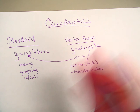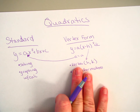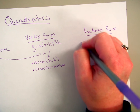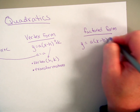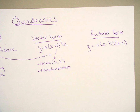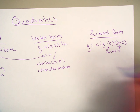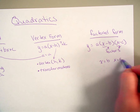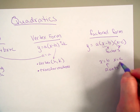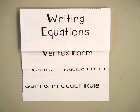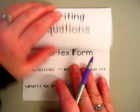Before, we were finding vertex form by locating the vertex and plugging it in. Today we'll do more work with vertex form. We've also talked about factored form, which lets you see the factors quickly. Changing those sign values gives you your roots — where the parabola hits the x-axis. Those are your solutions, roots, zeros, or x-intercepts — all the same thing. We'll also discuss the circle equation and the sum-product rule.